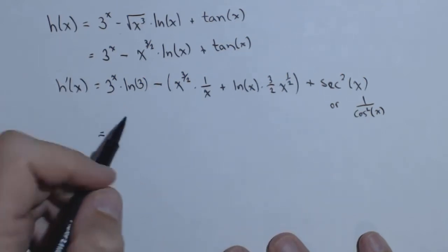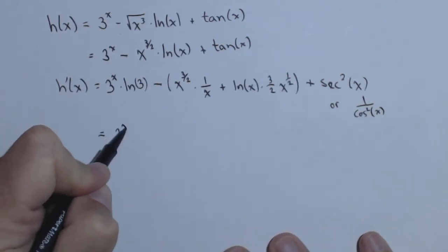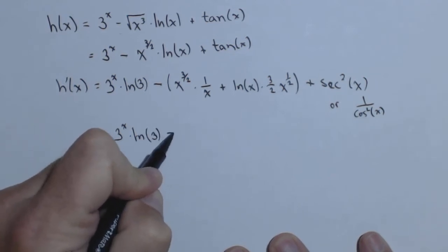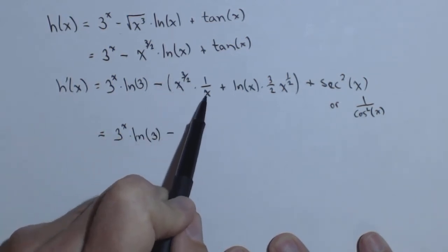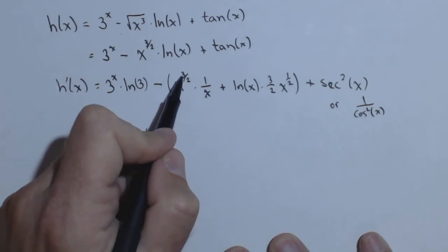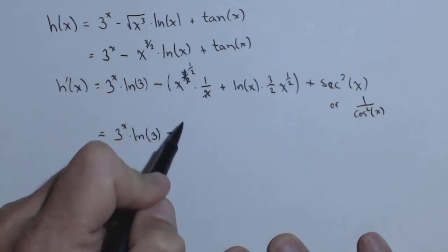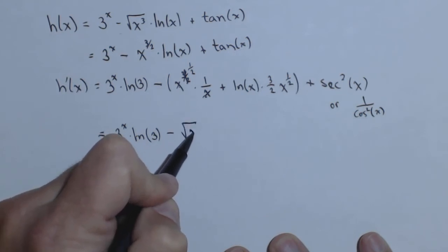This is fine for a final answer, but if you wanted to rewrite it, you might do 3^x times ln(3) minus - we can take an x away from here, so that would give us x^(1/2). So this would be square root of x.